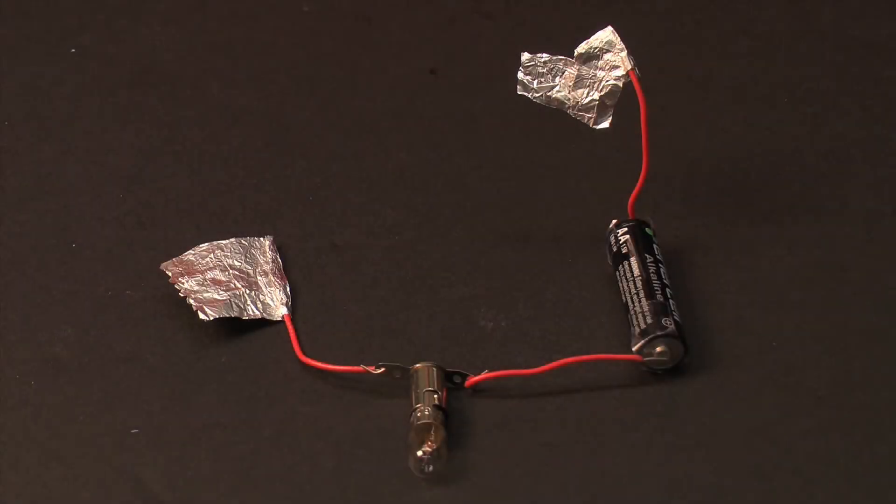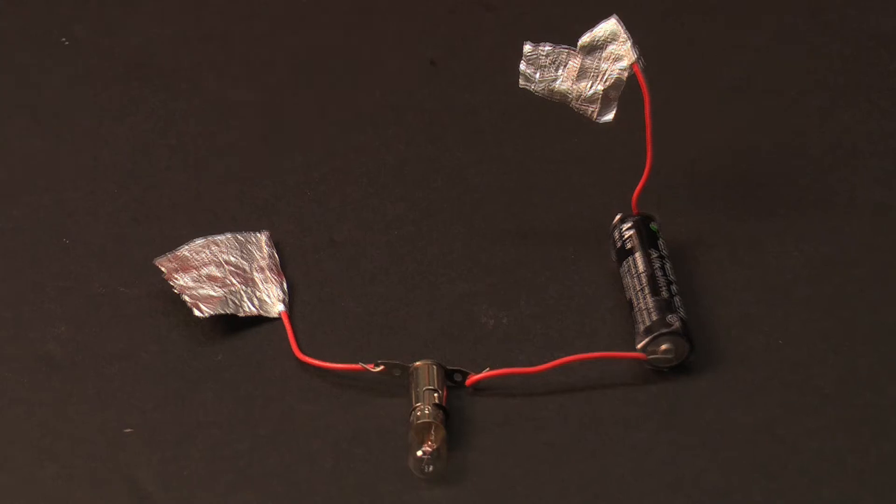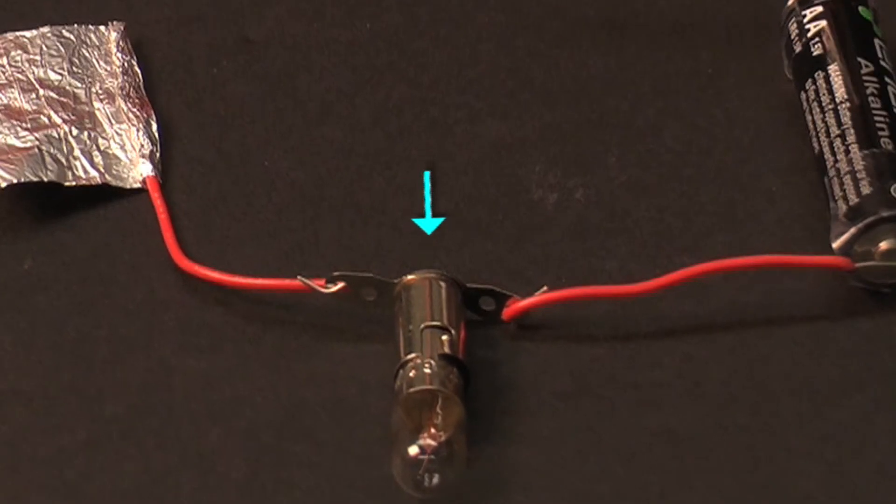In this next part of the activity, we're going to activate the light by using a switch. First, attach a lamp holder to the light bulb. Then, connect two 2-inch jumper wires to the lamp holder as shown.